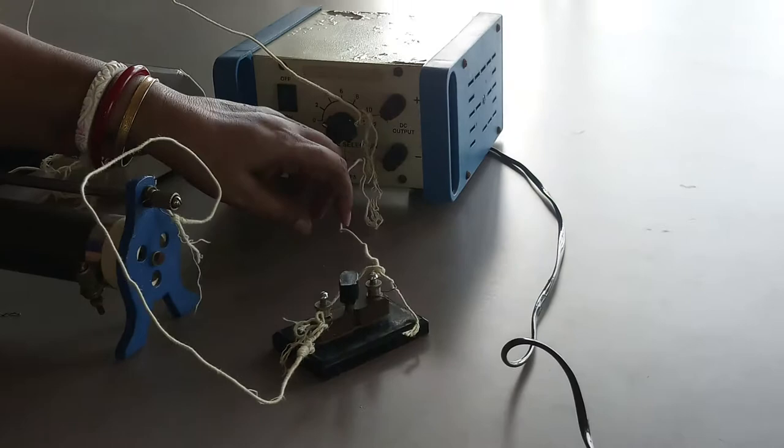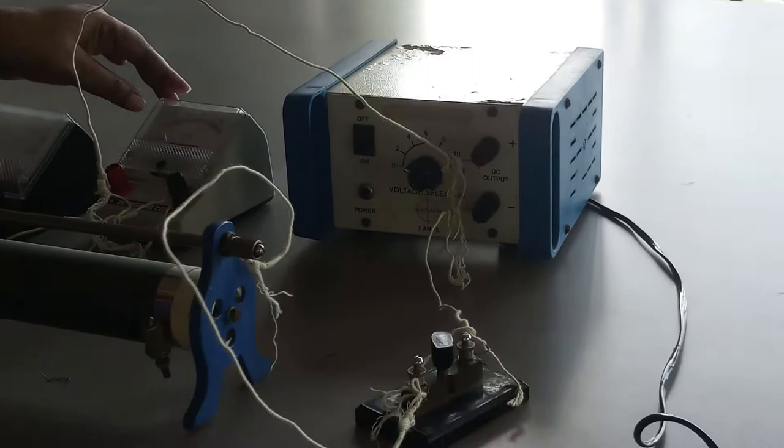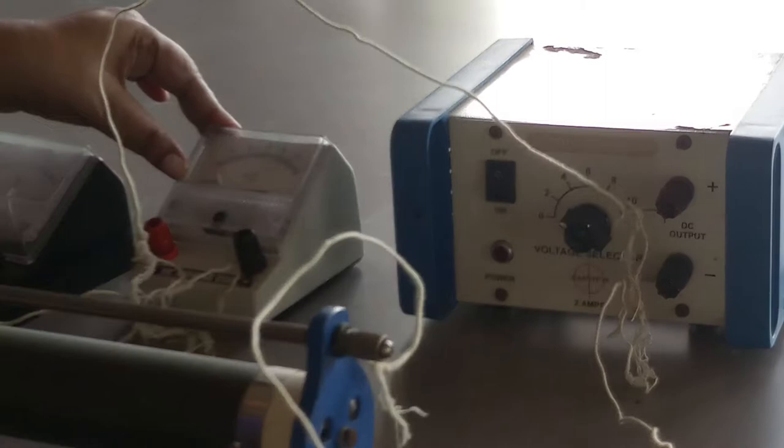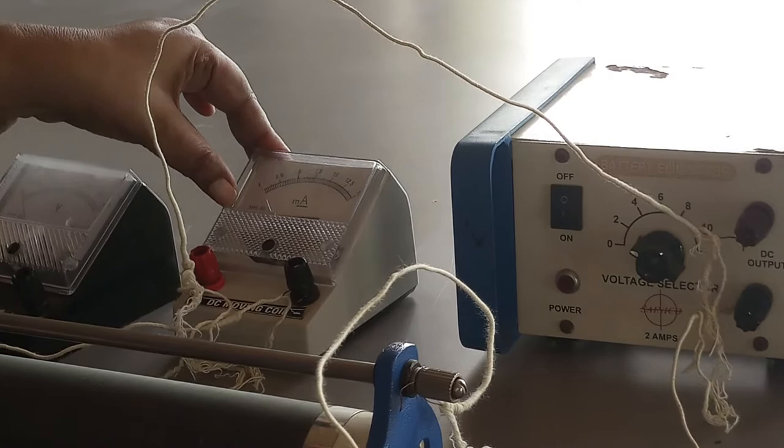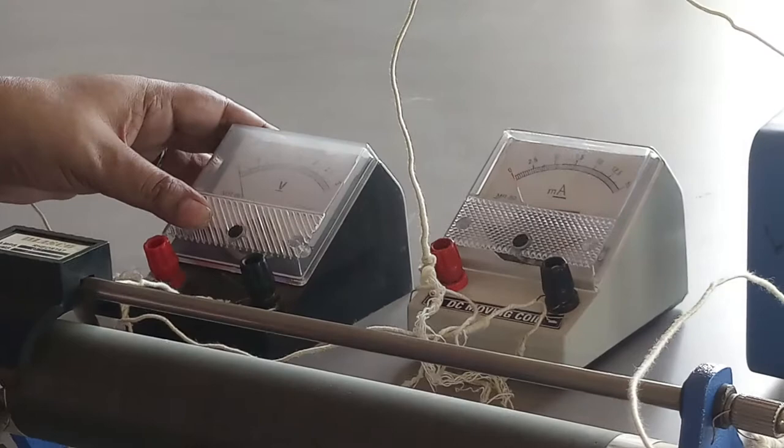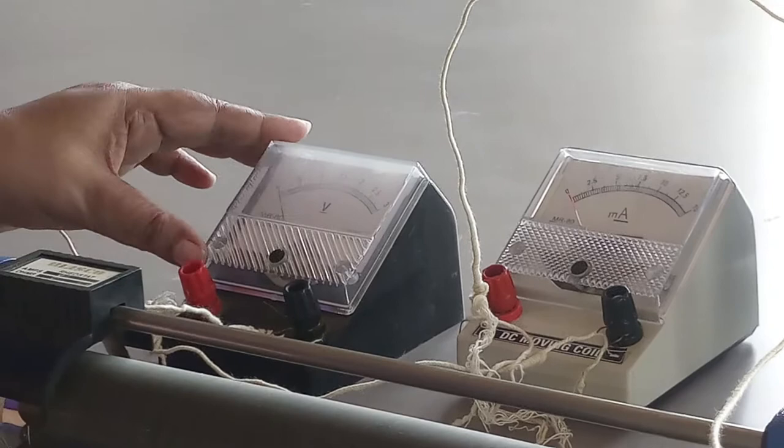First we find out the least count of the ammeter. Here we have a milliammeter, so the least count is 0.25 milliampere which we multiply by 10 raised to the power of minus 3 to get in amperes. The least count of the voltmeter is 0.05 volt. The range of this voltmeter is 0 to 3 volts and the range of the ammeter is 0 to 15 milliamperes.